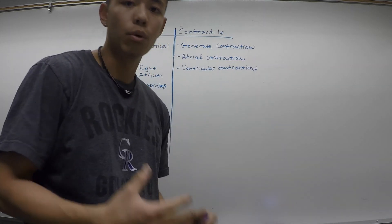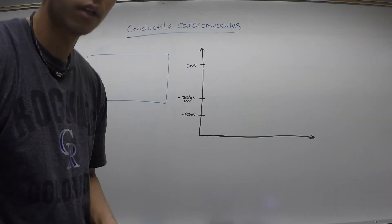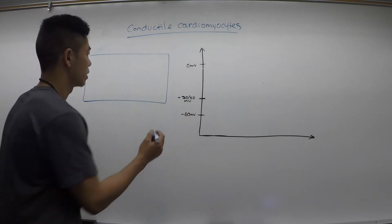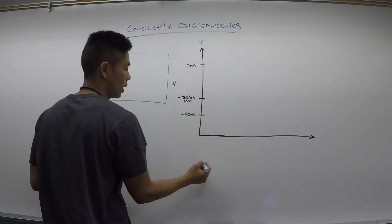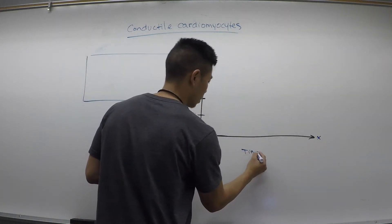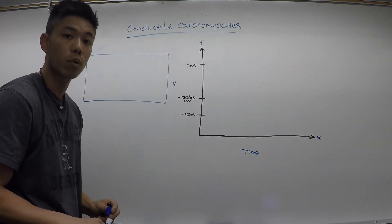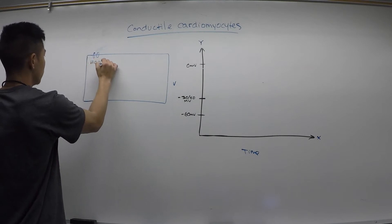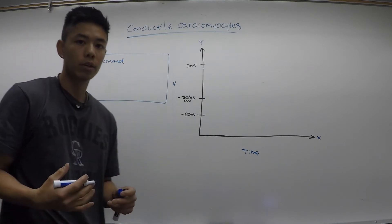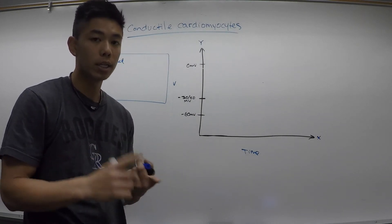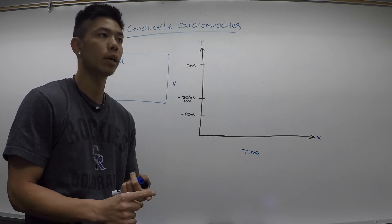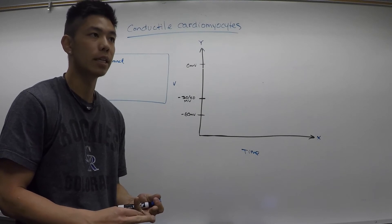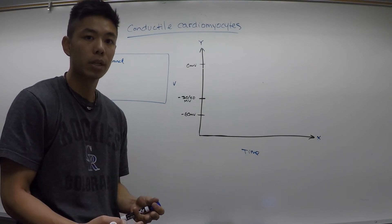Now we're going to dive into what that looks like on a deeper level. Here we have our conductile cardiomyocyte, and over here we have a graph with voltage on the y-axis and time on the x-axis. Three important channels to remember for our conductile cardiomyocytes: the first is our HCN channel. An HCN channel responds to two things — one is hyperpolarization, and the other is the amount of cyclic AMP bound to these HCN channels.